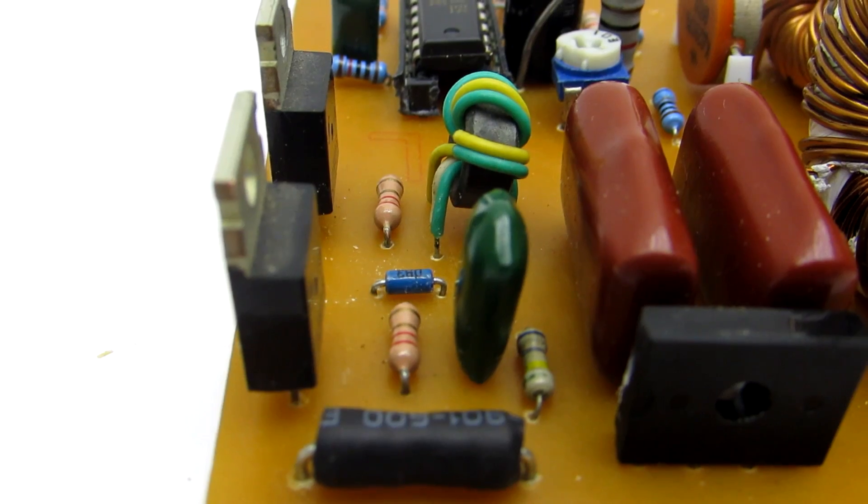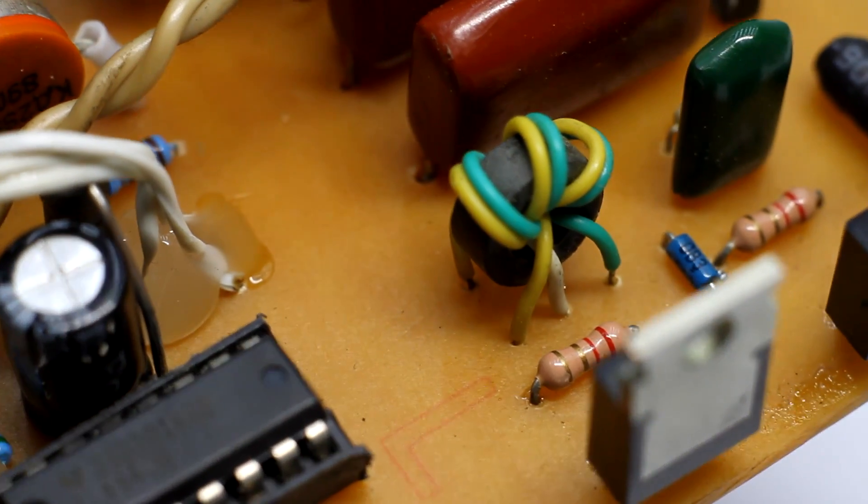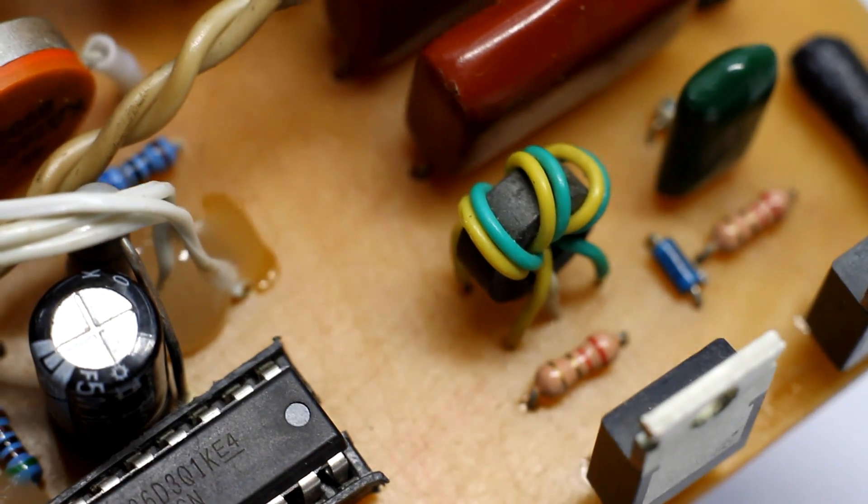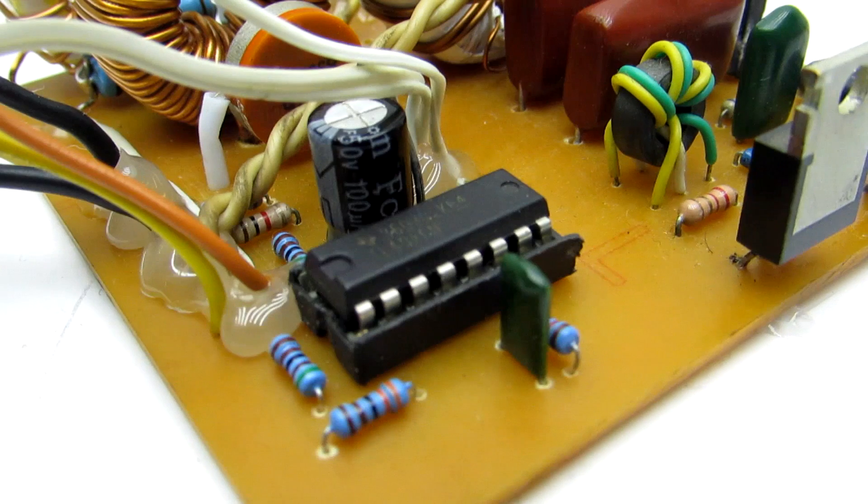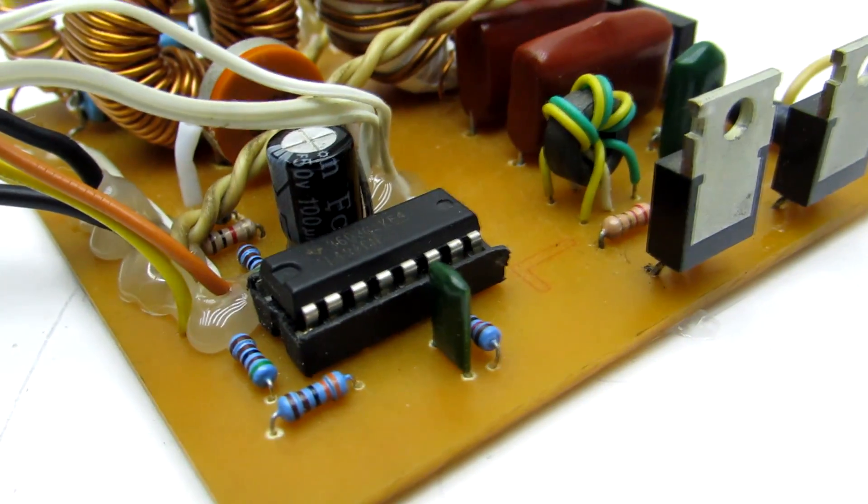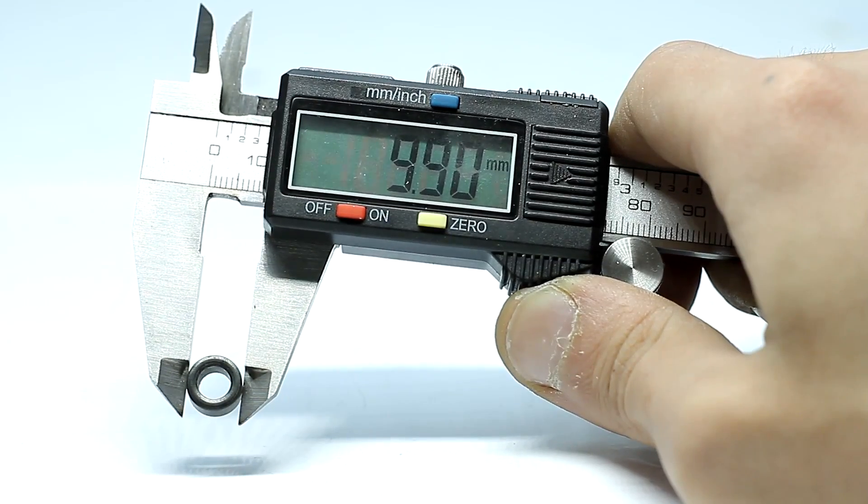Since many of our viewers have problems with winding of such transformer, it was decided to show everything clearly. I hope no longer will be problems with the connection. Transformer wound on a ferrite ring. Sizes are currently on the screen.